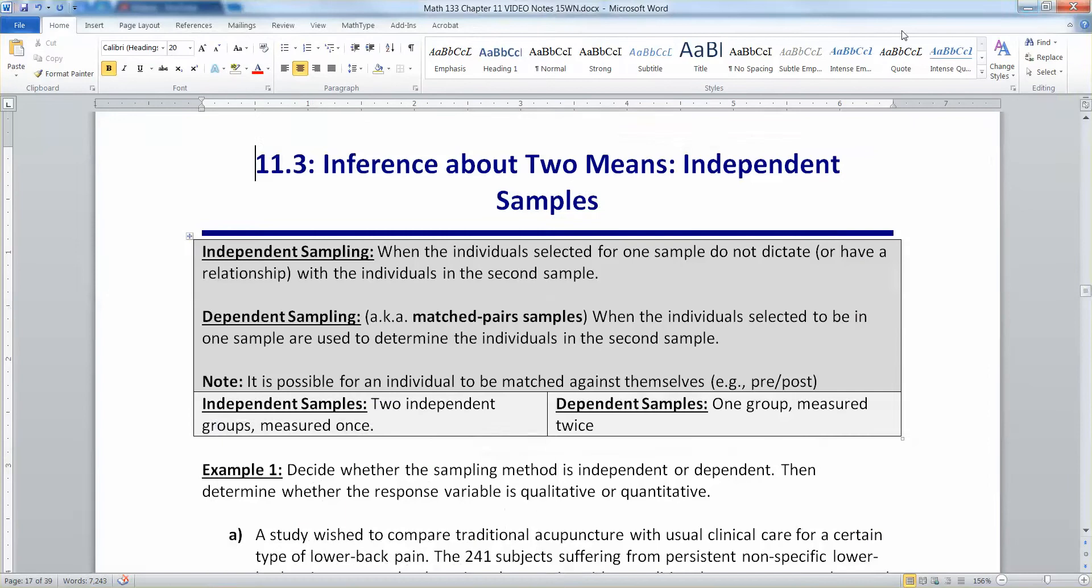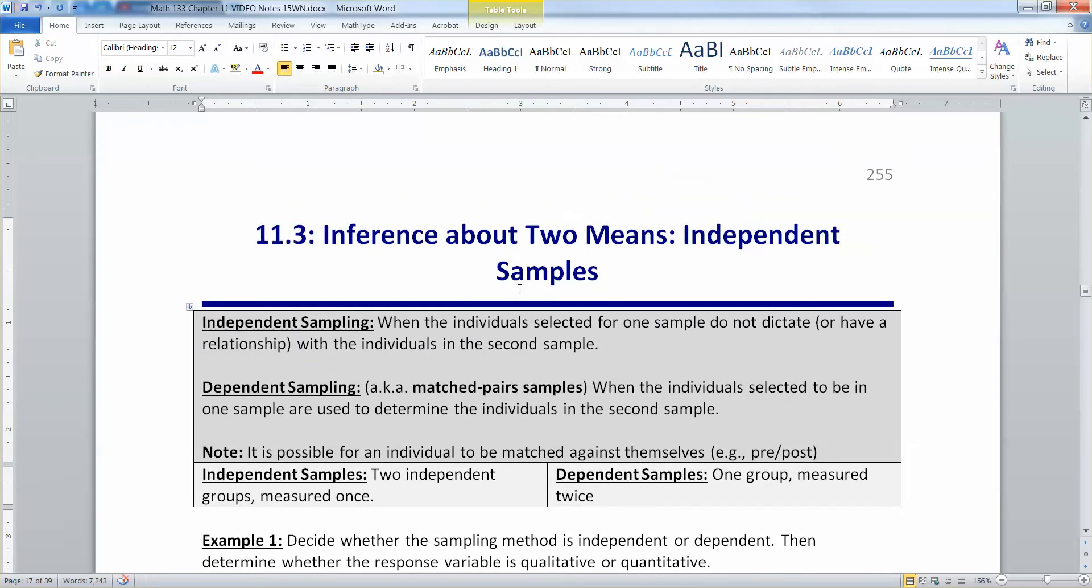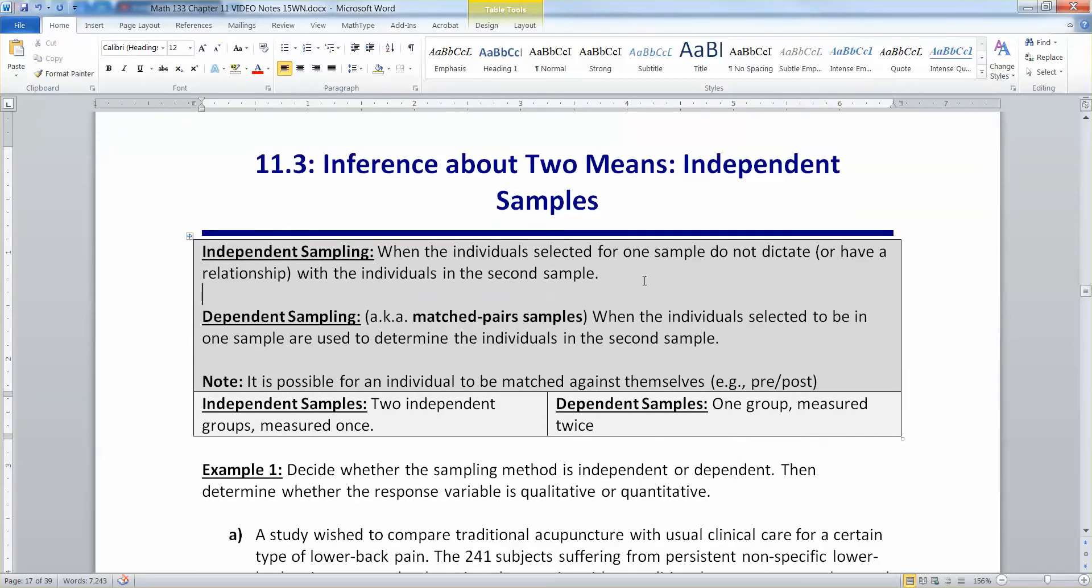But in section 11.3, we're going to be working with independent samples, and that's going to change everything - how we run the test and all sorts of other stuff. So let's remind ourselves what the difference is. Independent sampling is when the individuals in the sample have nothing to do with each other. There's no relationship. You can have different numbers - you could have 50 in one group, 75 in another. It's fine.